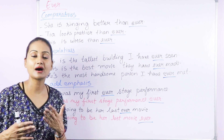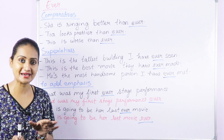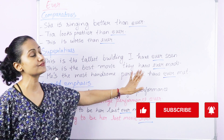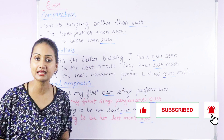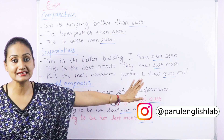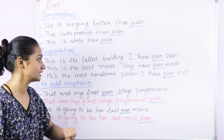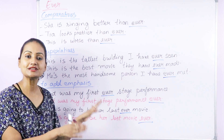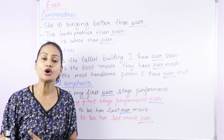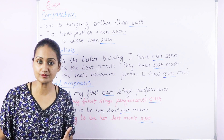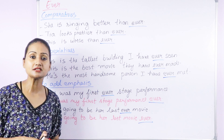We also use ever after superlatives. For example: This is the tallest building I have ever seen — before this I have never seen such a tall building in my life. This is the best movie they have ever made — out of all the movies they have made, this is the best. He is the most handsome person I have ever met. You can use any superlative — positive or negative — like: He is the most irritating person I have ever met, or: This is the worst movie I have ever watched.